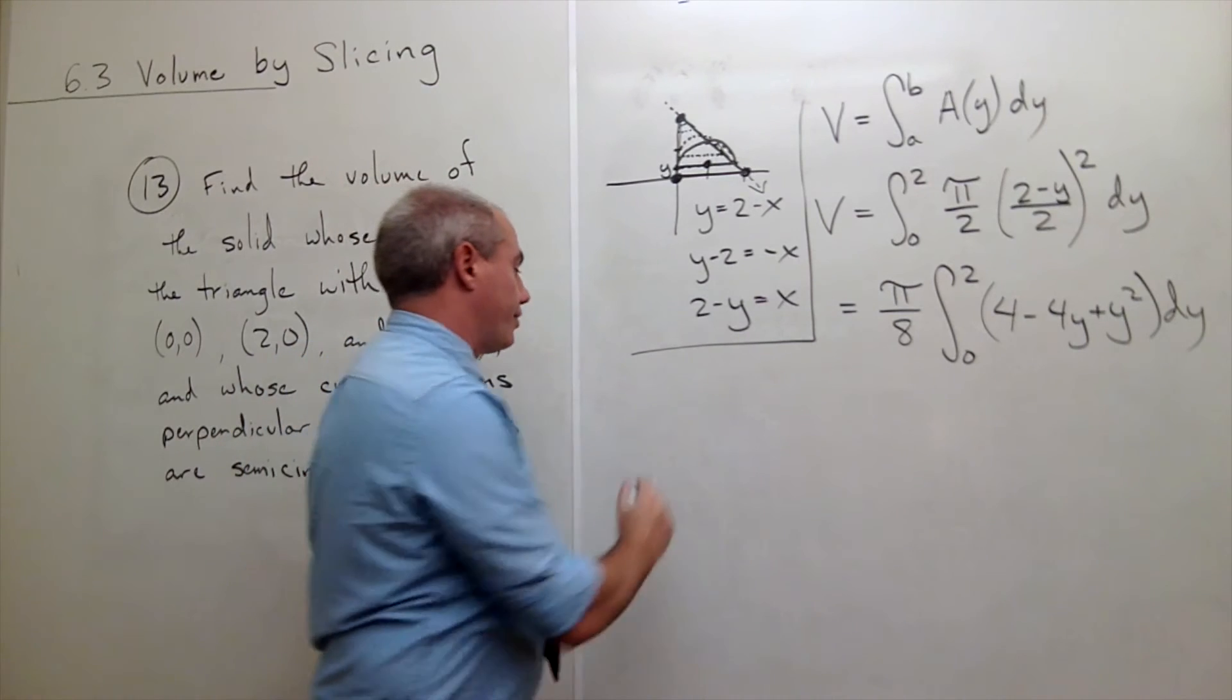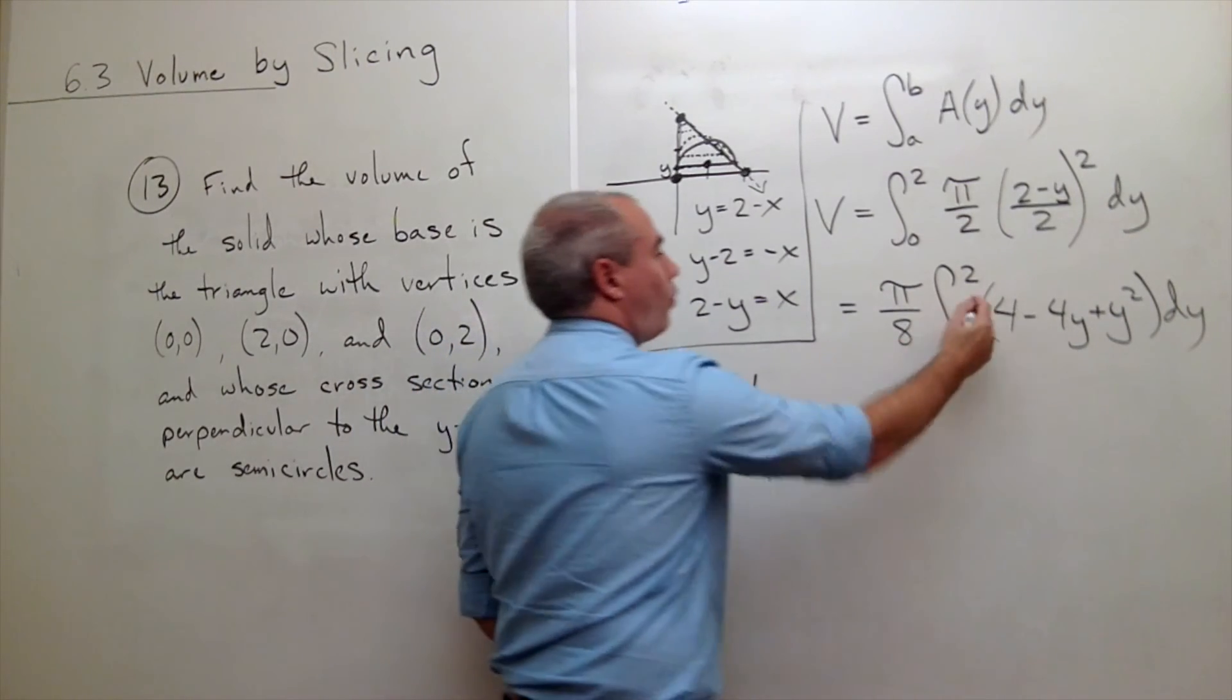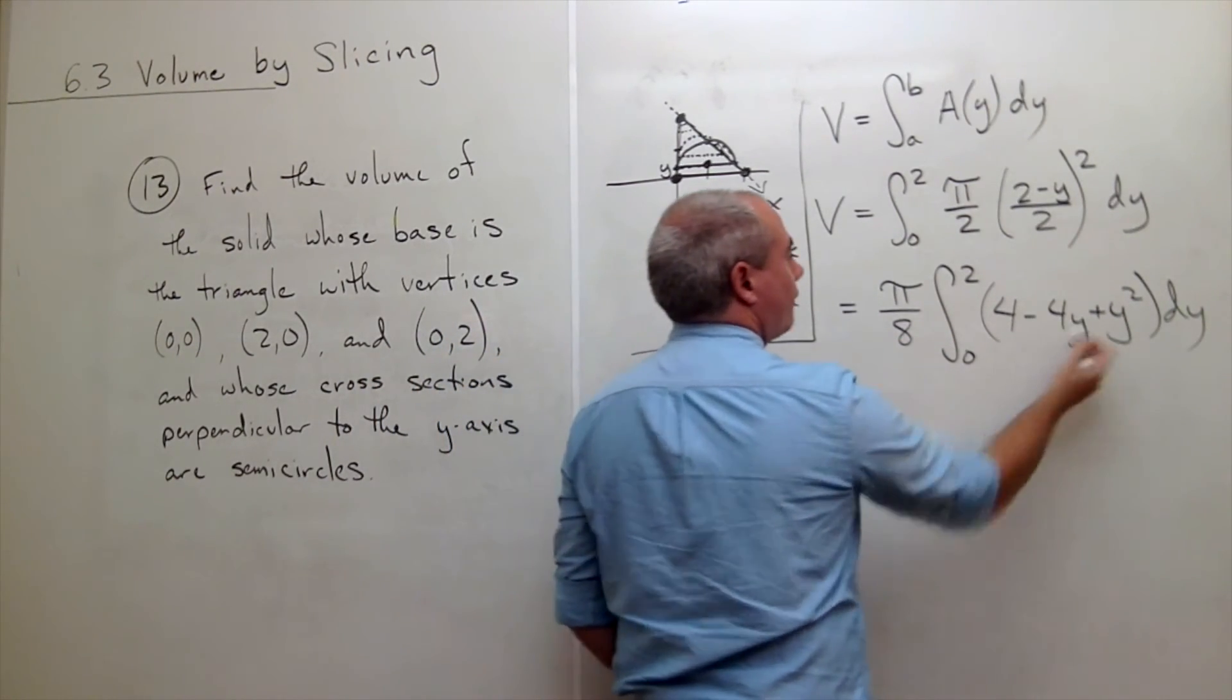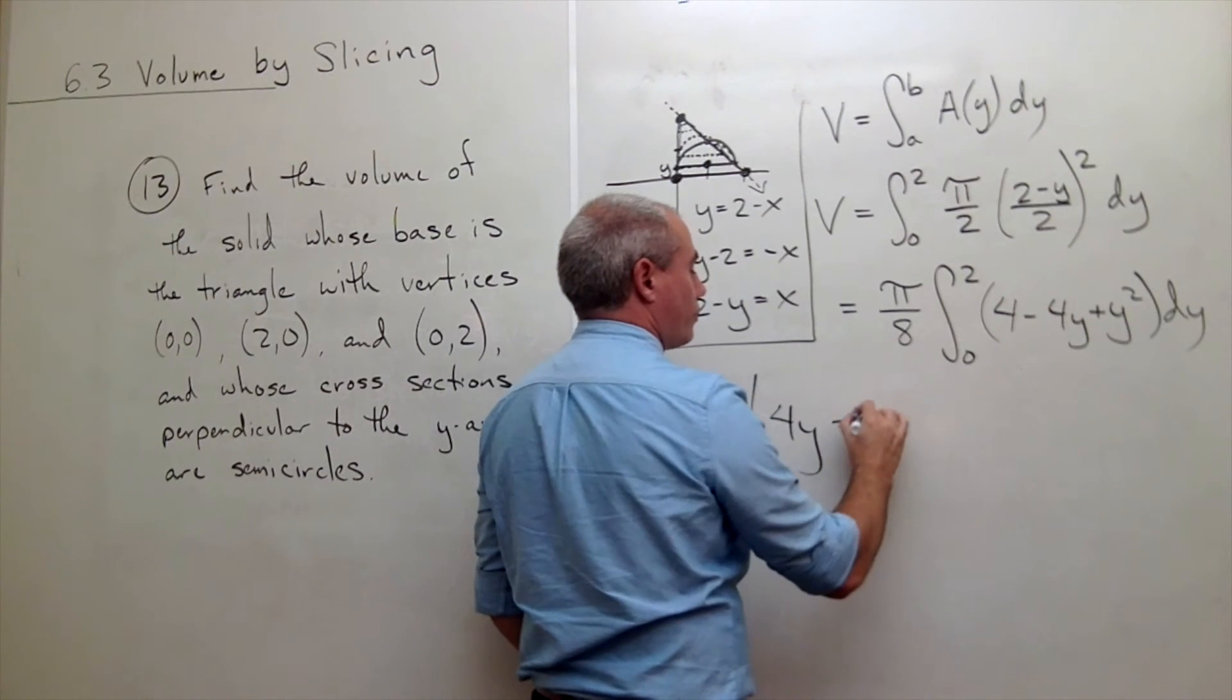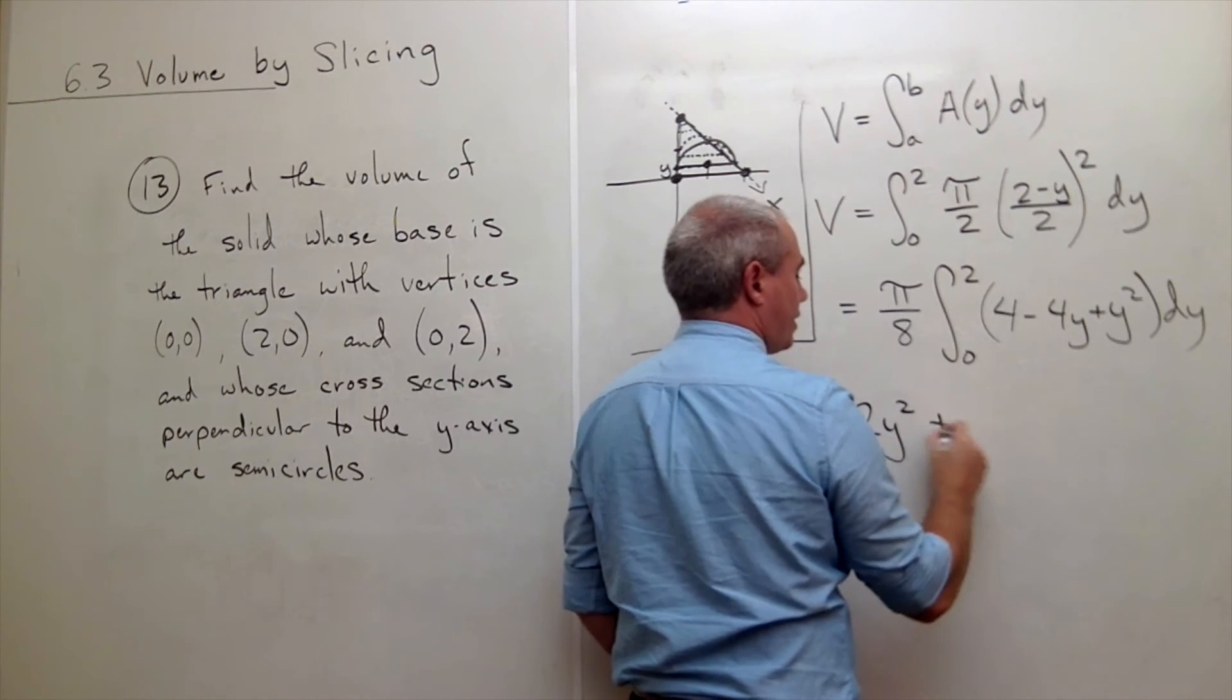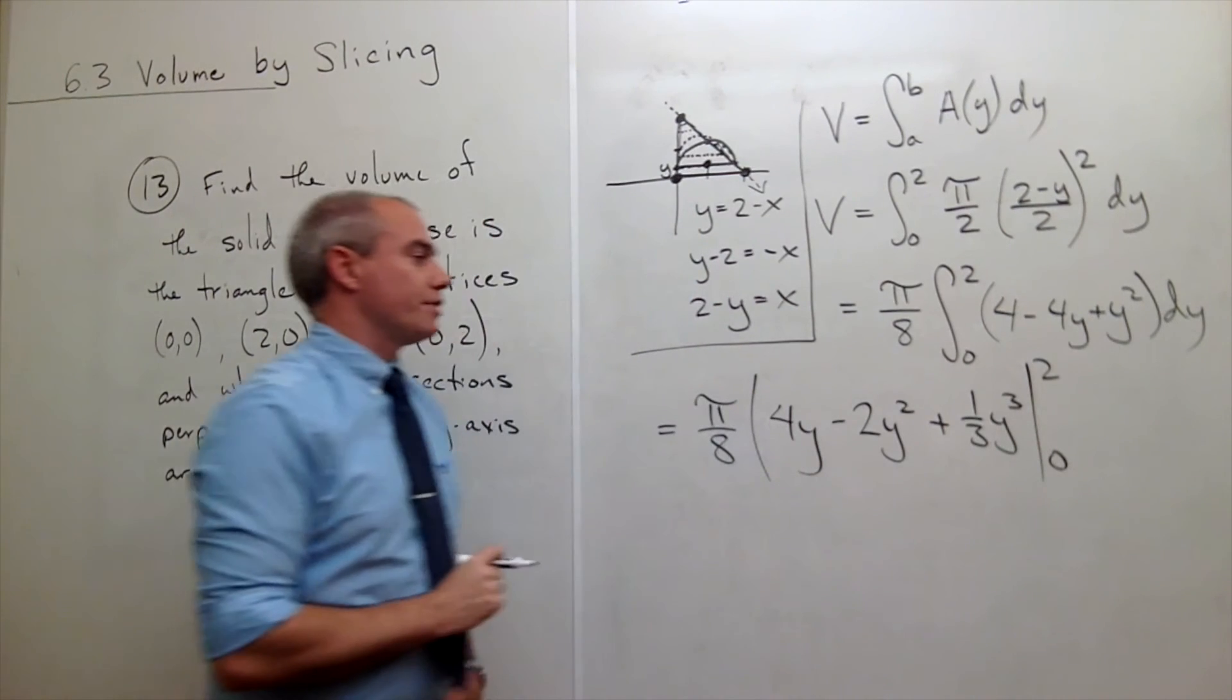Let's take an antiderivative. I've got my π over 8. Antiderivative of 4 is 4y. The antiderivative of negative 4y is minus 4 over 2 y², or just 2y². And antiderivative of y² is 1/3 y³. All of that's evaluated from zero to two.